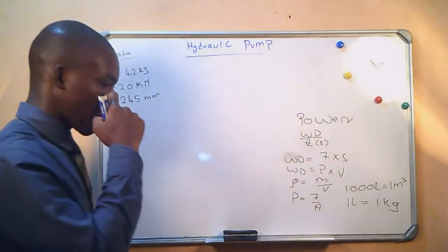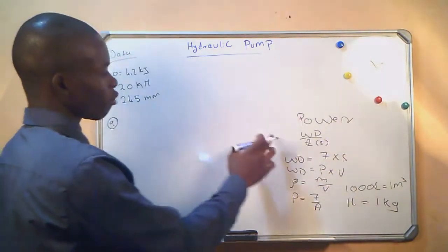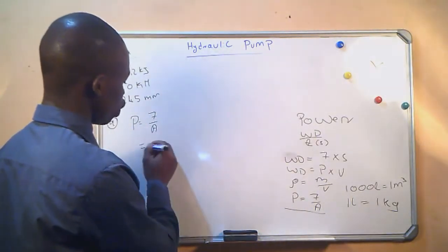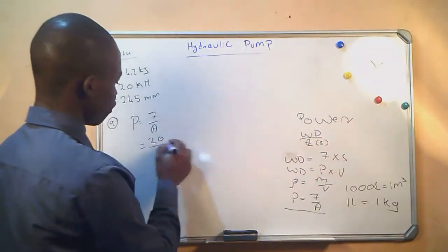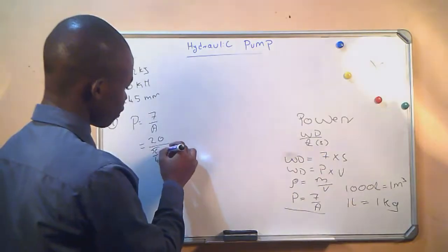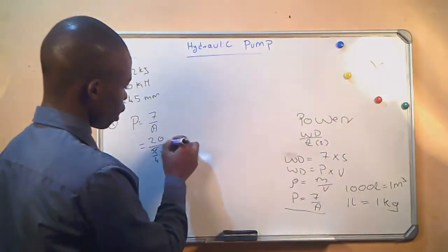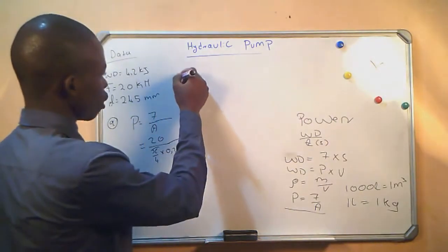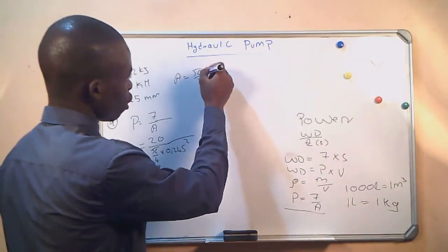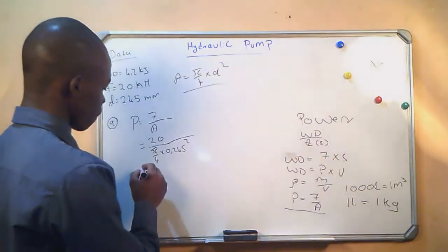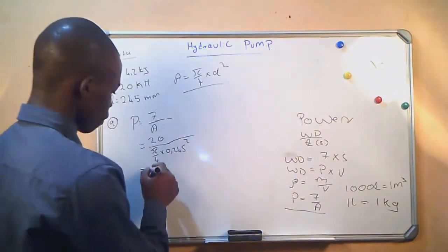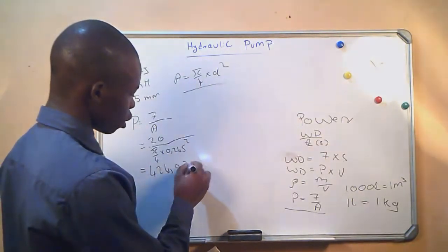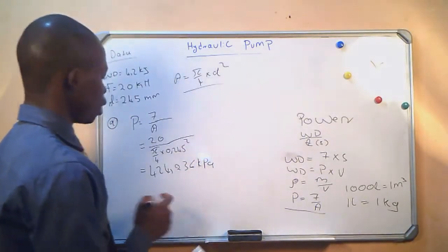Question (a): the pressure during the working stroke. The formula for pressure is force divided by area, which will be 20 kilonewtons divided by (π/4 × 0.245²). We know the area formula is π/4 × d². Our answer will be 424.236 kilopascals.